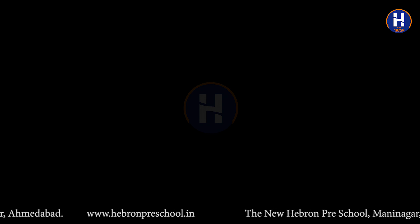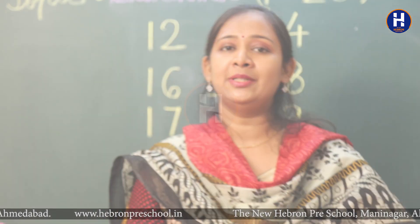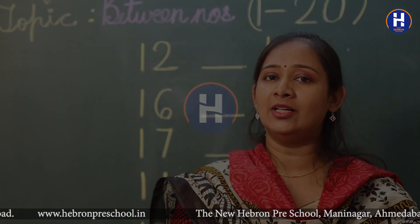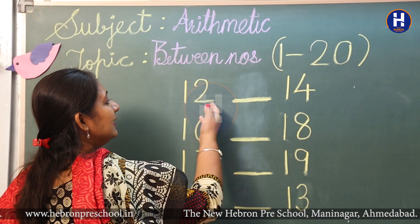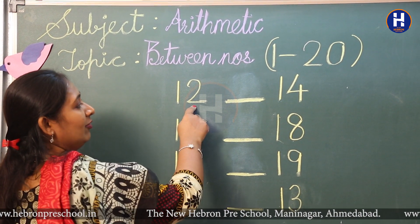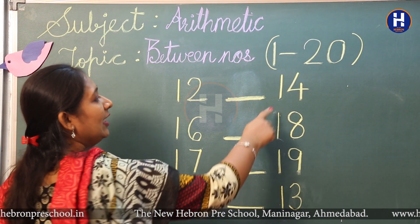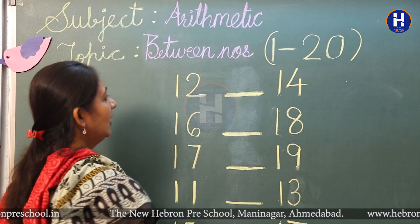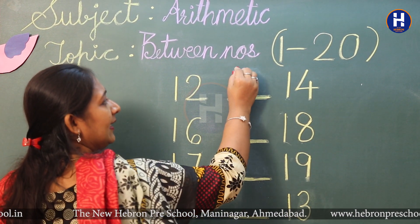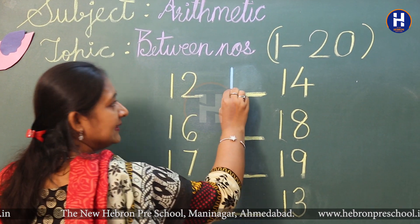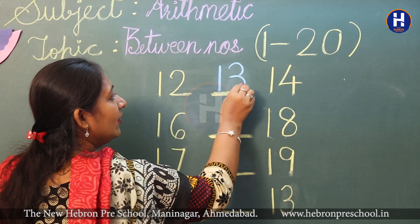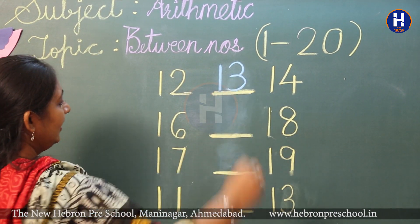I am going to give a few more examples on the blackboard to make it clear. Let's check these numbers on the board. This is number 12 and this is number 14. So, what is the middle number of 12 and 14? Yes, it is number 13.